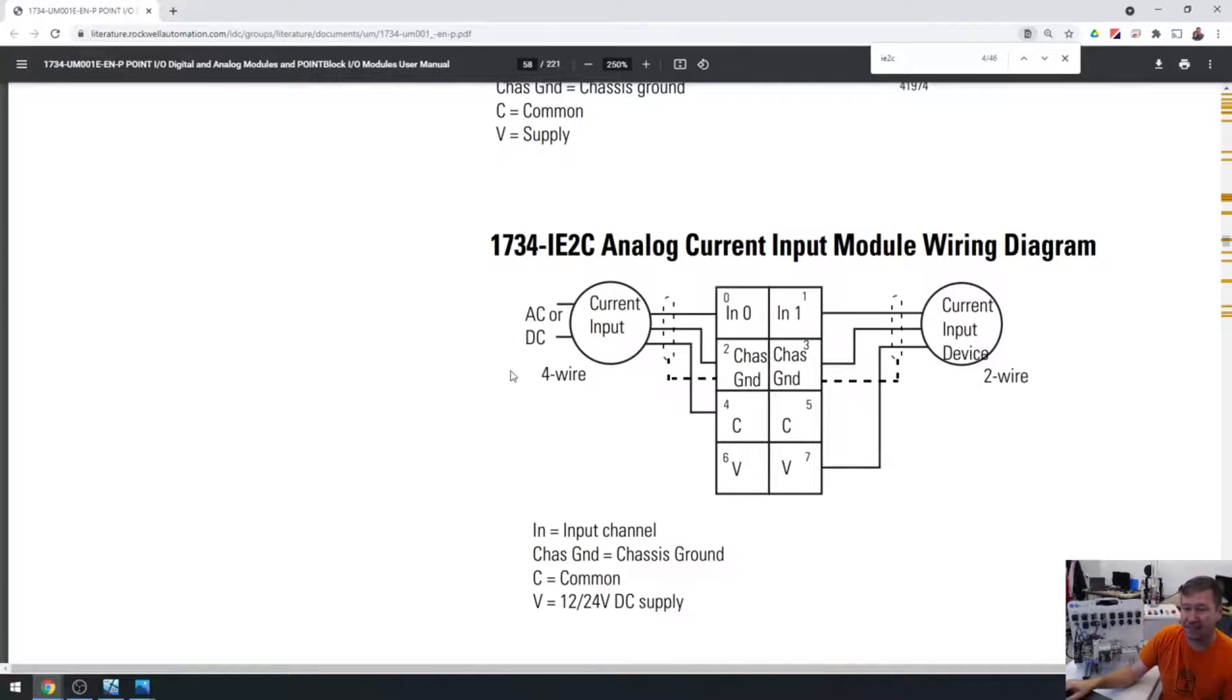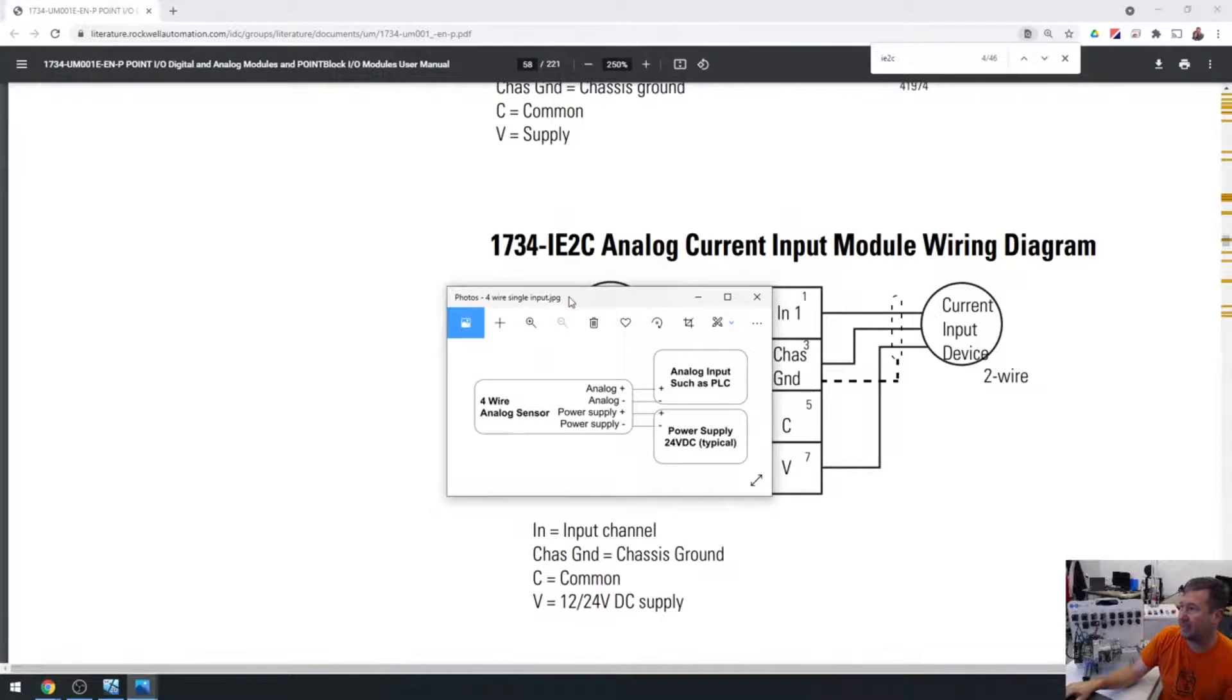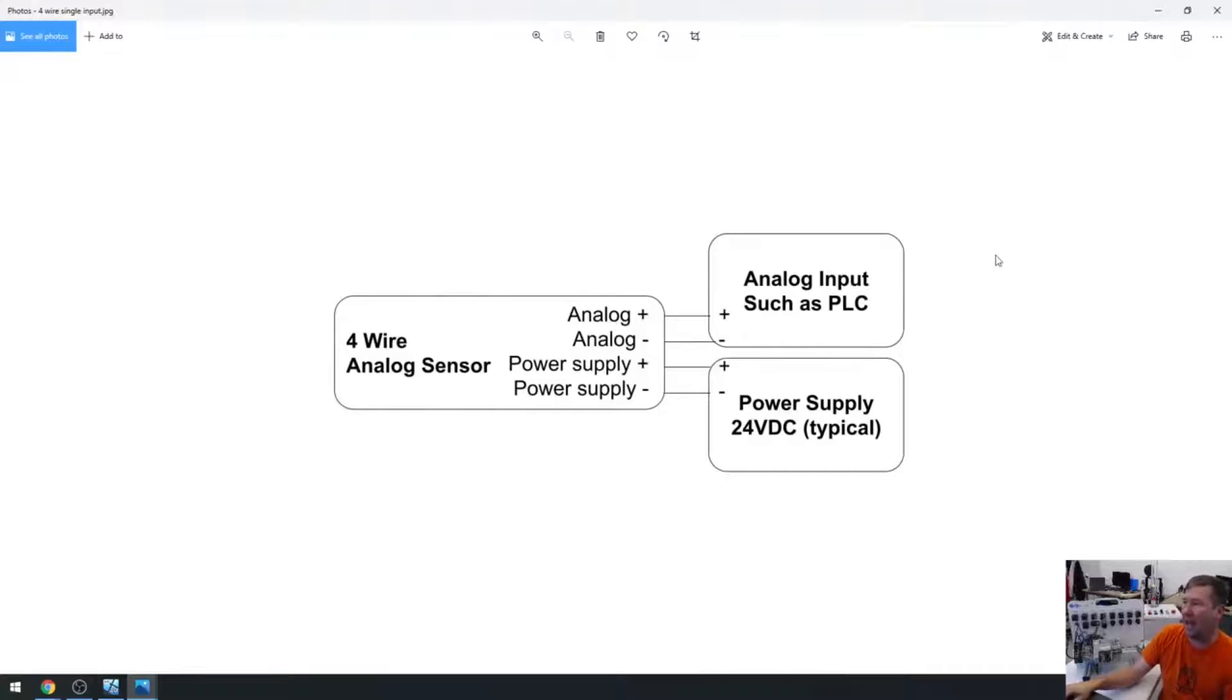This is a current two wire device. Now, one thing I did miss saying on this is this right here is what we call an actively powered device. So this is actively powered from somewhere else.